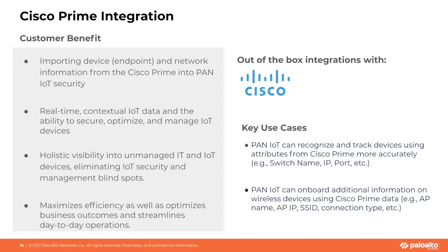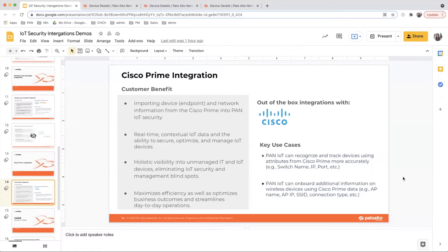With this integration, IoT security can provide more granular device information that gives customers holistic visibility into IT and IoT devices. This can also eliminate IoT security and management blind spots. PowerAlture IoT security can complement Cisco Prime by making full contextual device data available to customers. By combining Cisco Prime information with PowerAlture IoT, customers can enrich their Cisco environment with real-time contextual IoT data and gain the ability to secure, optimize, and manage IoT devices better.